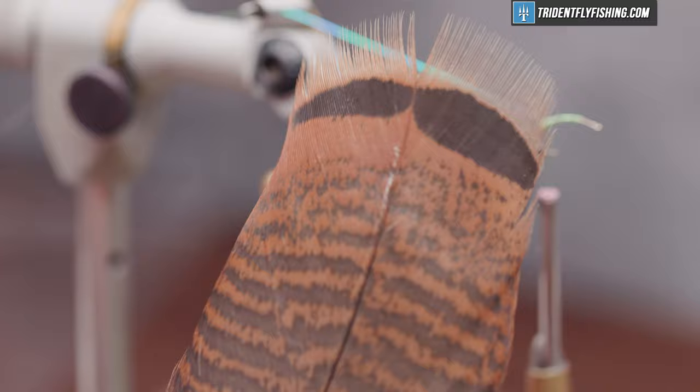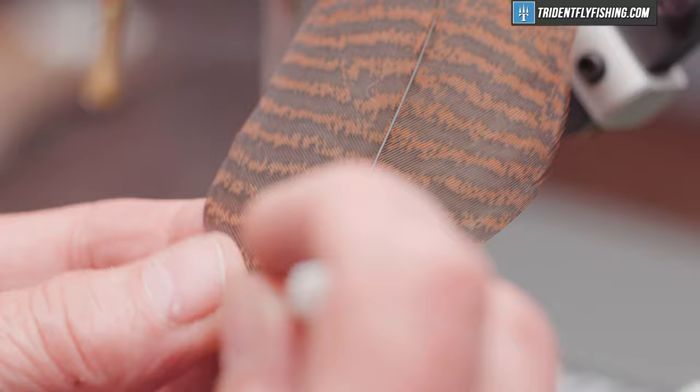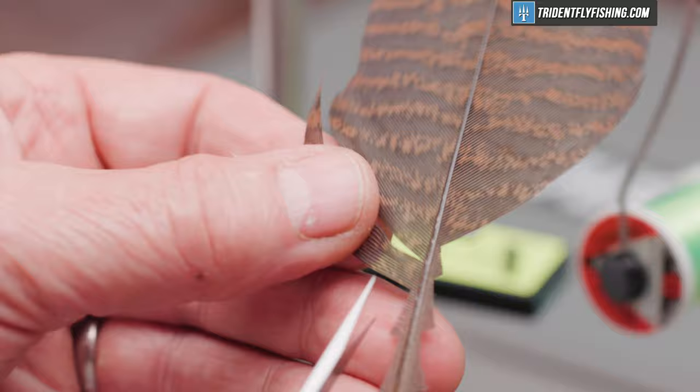The body is just a turkey flat. You can also use a turkey tail feather. I think the flats, the individual fibers are a bit thinner than turkey tail feathers. Coloring is the same. Nice, pretty mottled color.